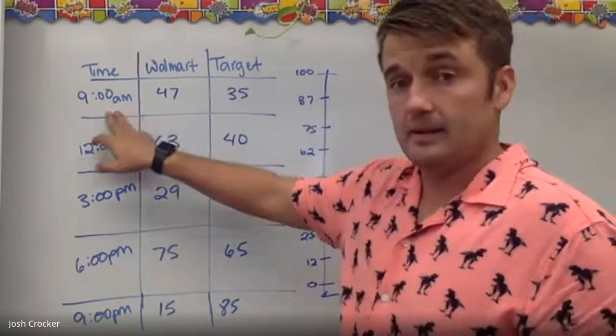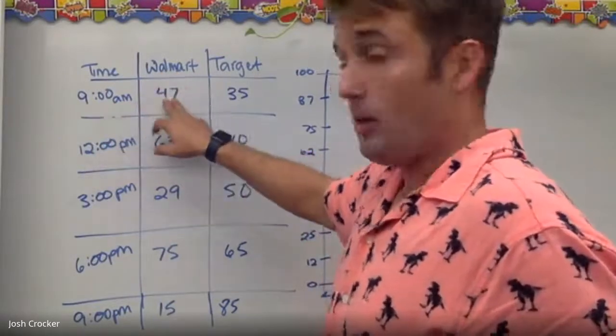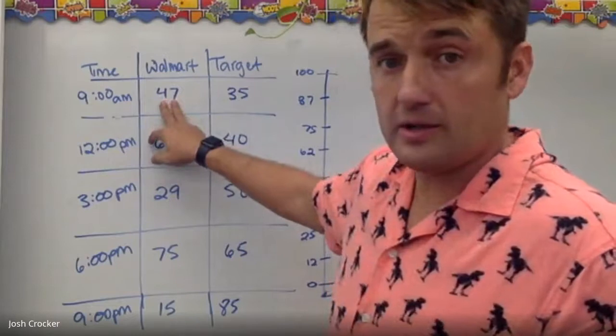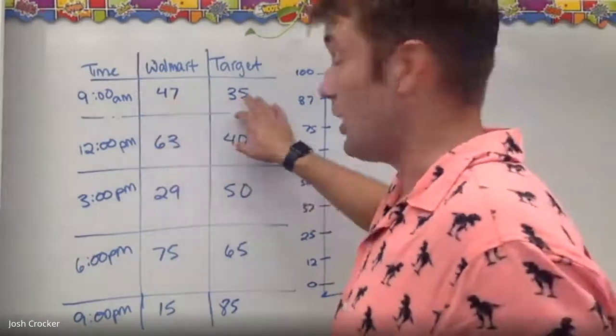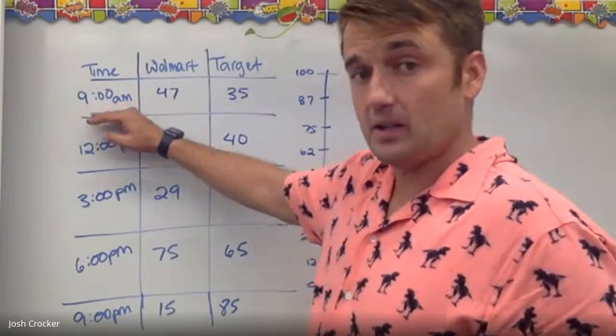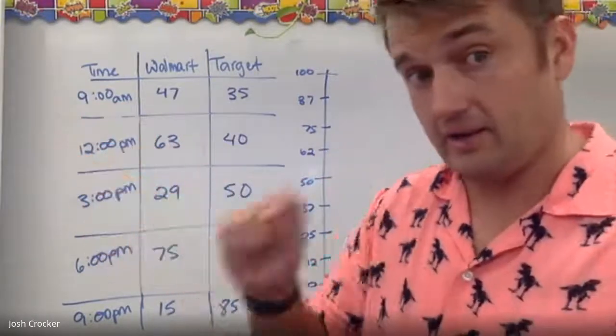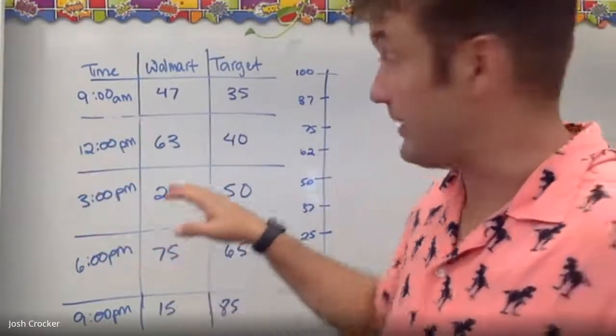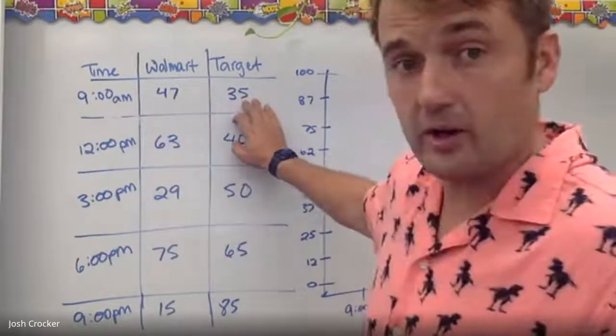But my data starts at 9 a.m. and I've got Walmart, so this is cars in the parking lot. Cars at Walmart and cars at Target by the time of day. So at 9 o'clock in the morning, I drove over there yesterday, I counted the cars, of course I did. And there were 47 cars at Walmart and there were 35 cars at Target.